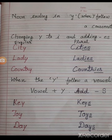When Y follows a vowel: Y से पहले यदि vowel आता है, तो आपको Y को replace नहीं करना है। Simply S add करना है। Key → Keys. Toy → Toys. Day → Days.